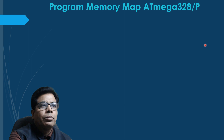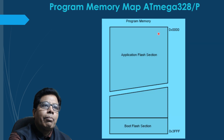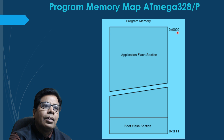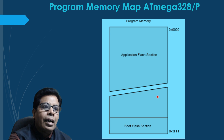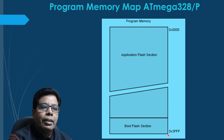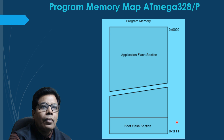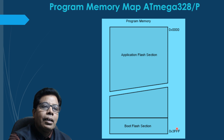For software security, the flash memory space is divided into two sections: the bootloader section and the application program section. The program memory map starts at 0x0000h and ends at 0x3FFFh. At the start we have the application flash section beginning from 0x0000h, and then the boot flash section starts and ends at 0x3FFF. The total is 32 kilobytes, or 16K by 16.